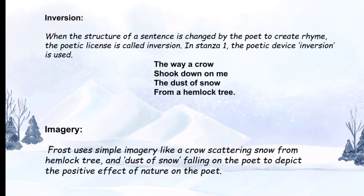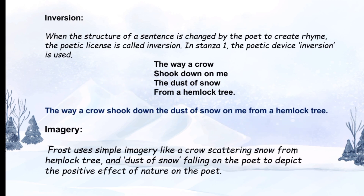We also find the example of inversion. Inversion is when the structure of a sentence is changed by the poet to create rhyme — this poetic license is called inversion. In stanza 1, the device of inversion is used. The lines 'the way a crow shook down on me the dust of snow from a hemlock tree' can actually be written as 'the way a crow shook down the dust of snow on me from a hemlock tree.'